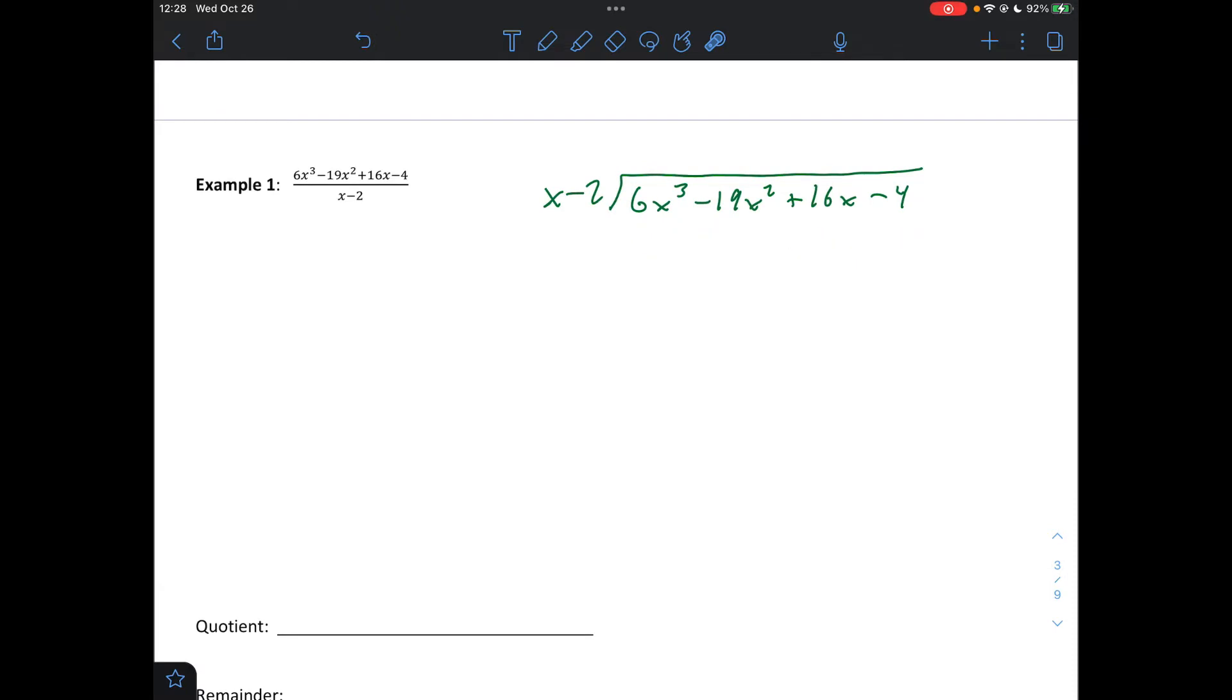Okay. Secondly, when we divide, we only divide first term into first term. So we have 6x cubed divided by x, and what's left is 6x squared. I'm going to put that above my x squared over here. The next step in long division is to multiply this times this. So we get 6x cubed minus 12x squared.